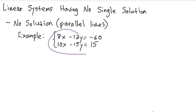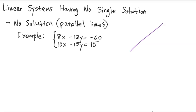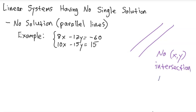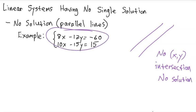This occurs when the two lines in the system are parallel to each other. And we know that parallel lines do not cross. So if we have two lines that are parallel to each other, they will never cross over, and so there will be no X, Y intersection, and therefore no solution. So let's first put this into Desmos and we'll see that the two lines are parallel.